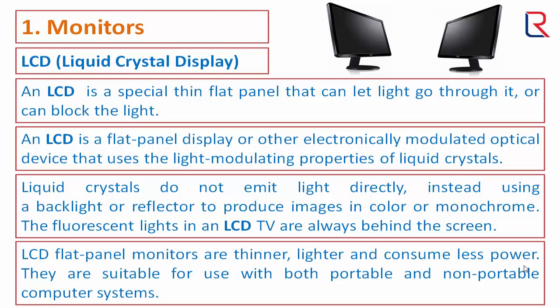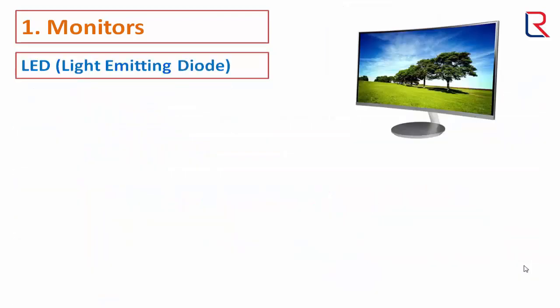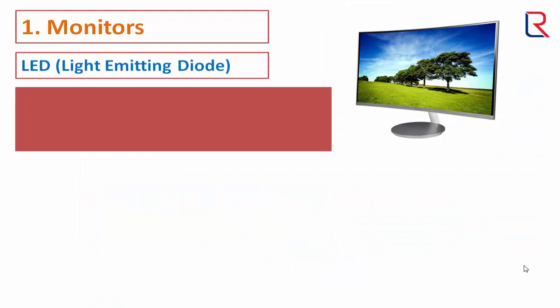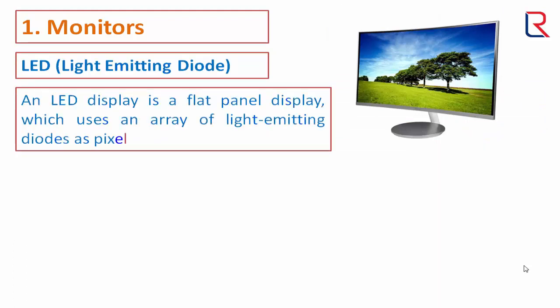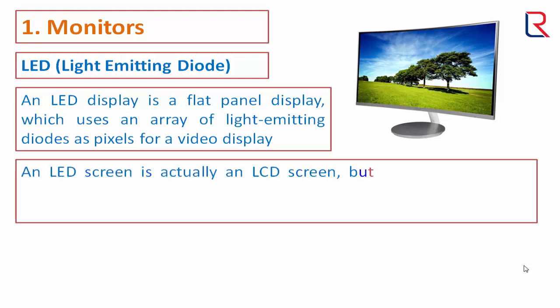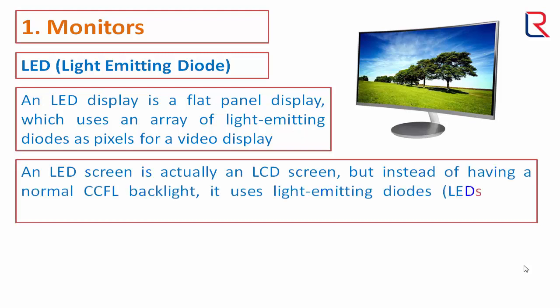LCD flat panel monitors are thinner, lighter, and consume less power. They are suitable for use with both portable and non-portable computer systems. LED: An LED display is a flat panel display which uses an array of light-emitting diodes as pixels. An LED screen is actually an LCD screen but instead of a normal CCFL backlight, it uses light-emitting diodes as the source of light behind the screen.